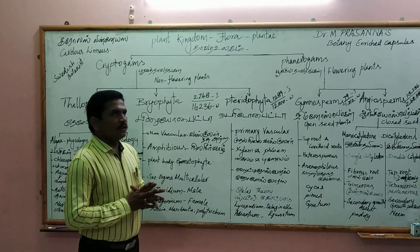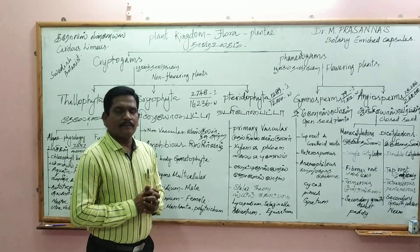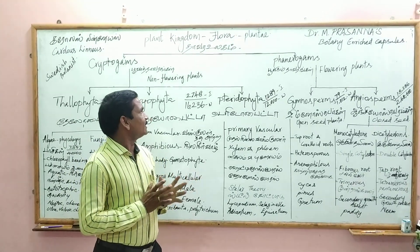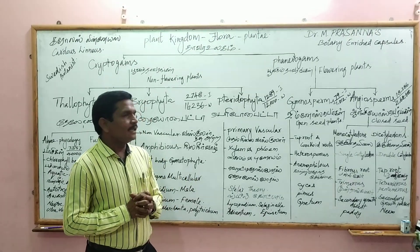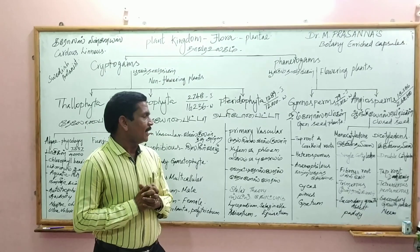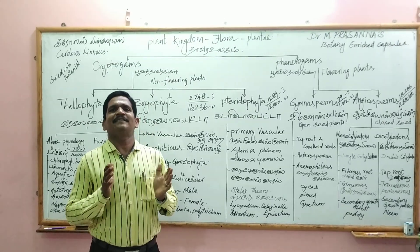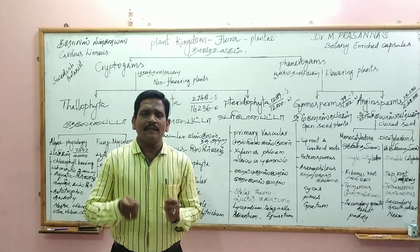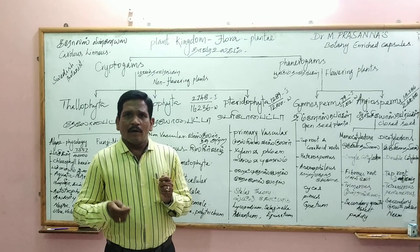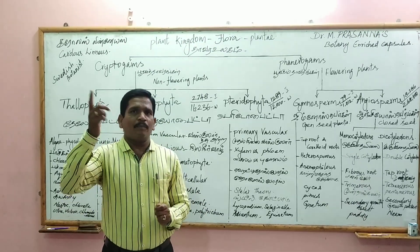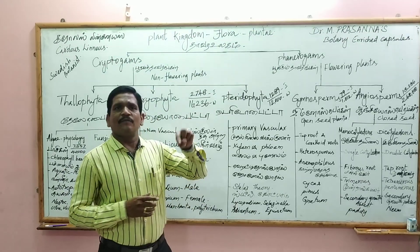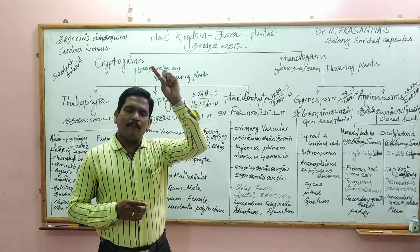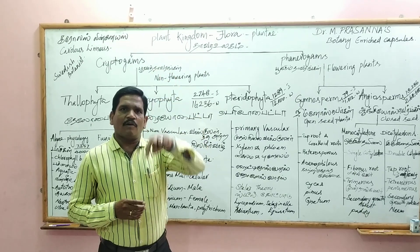It is called Pteridophyta. It is a primary vascular plant. It contains xylem and phloem. Xylem conducts water from root in an upward direction. Phloem conducts food substances from upward to downward direction.